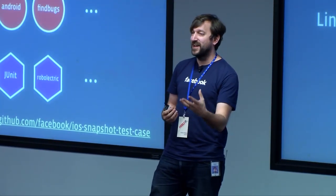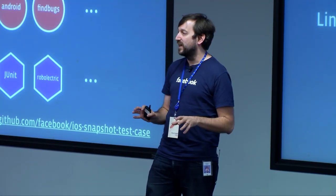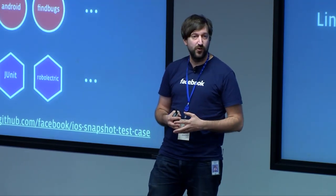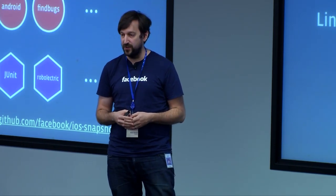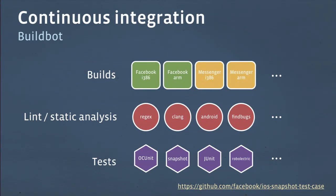So we do code reviews. The next thing is you land that code and have absolutely no guarantee that what you've landed actually works. We make use of a tool called Buildbot, which is a Python tool for assembling your own continuous integration environment. It's incredibly flexible and we use it extensively. What we do is you check in your code and we do a build — does it even compile on iOS and on Android? We next run lint and static analysis over it. We can use regular expressions to follow naming conventions, do static analysis using tools such as Clang, and on Android we make use of the Android linter with our own custom rules built from the one that ships with the Android SDK.